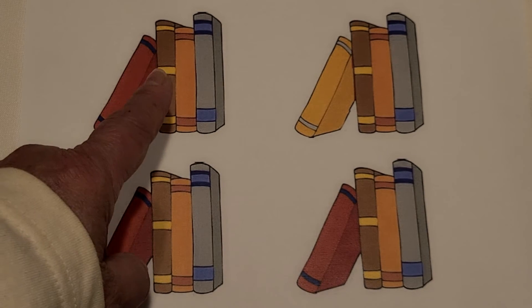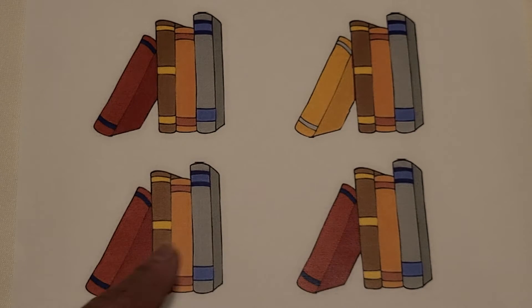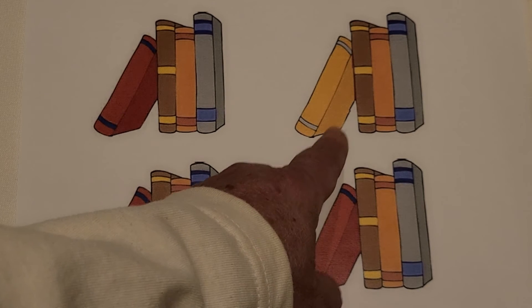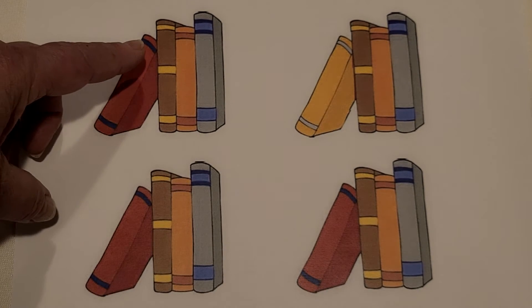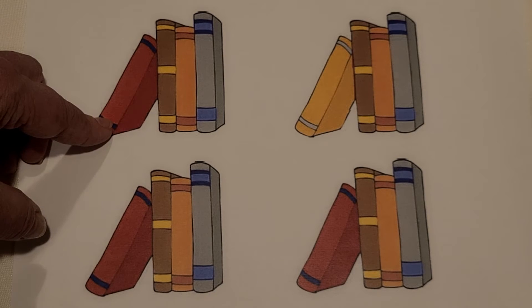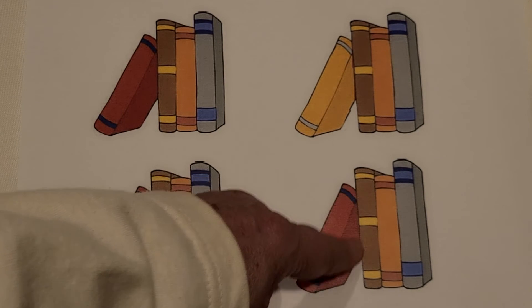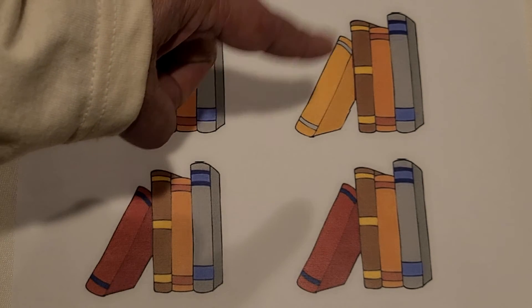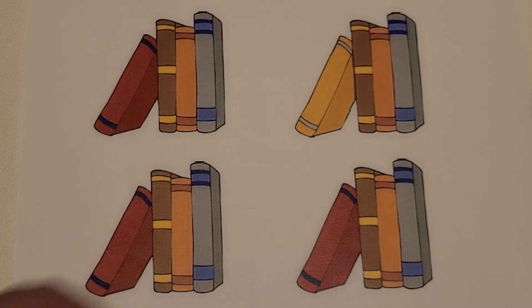Here we have four groups of books. One group is different. Can you find the group of books that are different? If you said this one, you're right. This group of books has a red book leaning against it, and so does this one, and so does this one. So these three are the same. This one has a yellow book leaning against it — it's different. This group of books is different than the others.